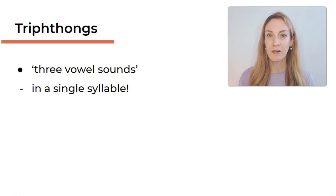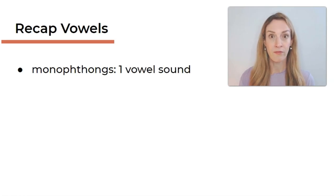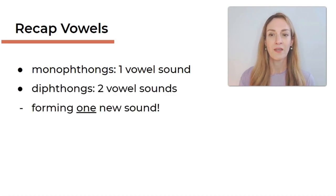Let's do a little recap on the vowels before we go into detail. We have monophthongs, those are single vowel sounds. They just have one target. We have diphthongs, these are two vowel sounds put together with smooth movement between each other and they form one new sound. And then we also say they form the nucleus of the syllable.